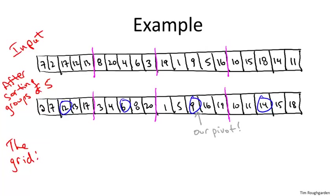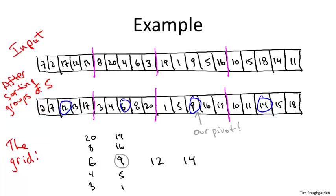The grid always has five rows; with n=20 we have four columns. We arrange columns so the middle elements increase left to right: 6, 9, 12, 14. The median of medians, our pivot, is the 9. Each column contains the other four elements of its group arranged from smallest at bottom to largest at top.